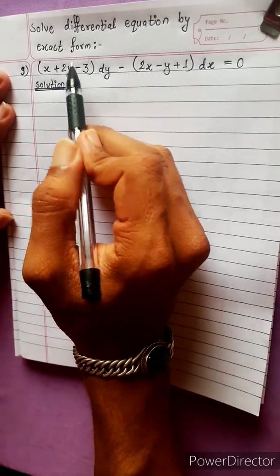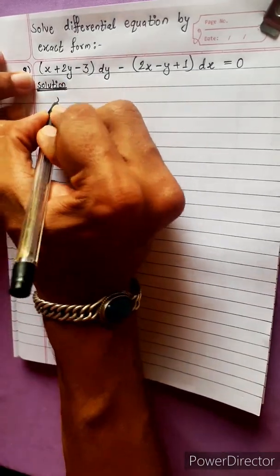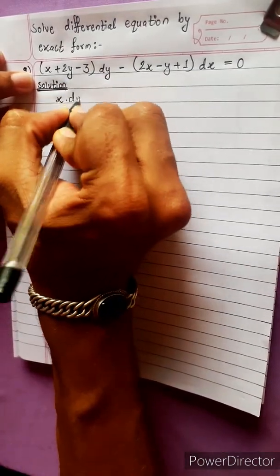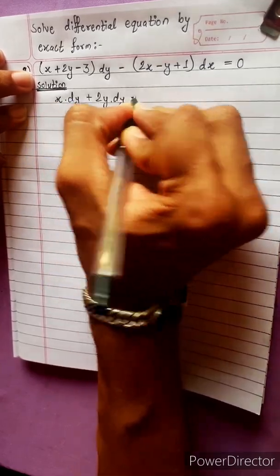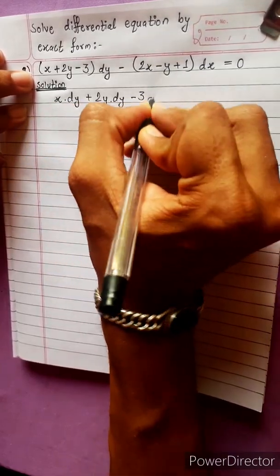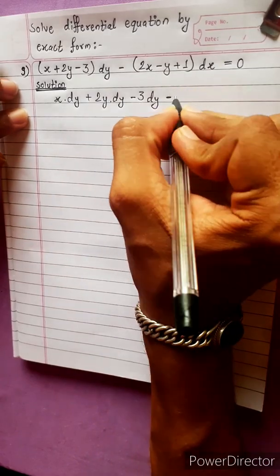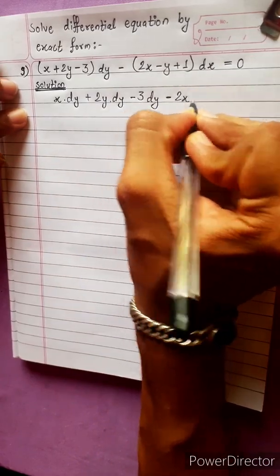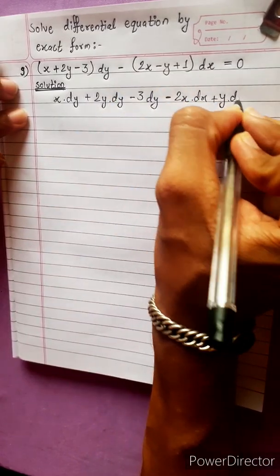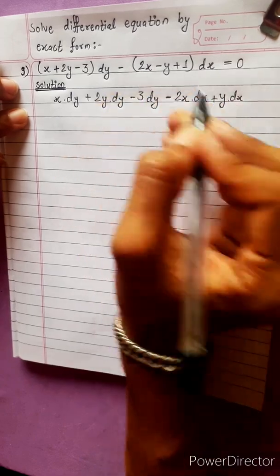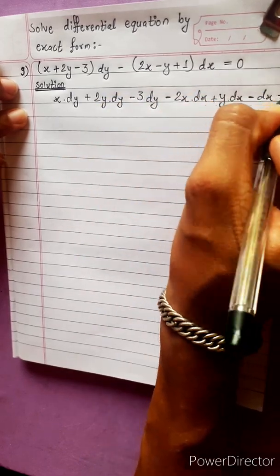We have a differential equation in exact form: x dy plus 2y dy minus 3 dy. We need to multiply the equation, and we also have minus 2x dx plus y dx minus dx equal to 0.